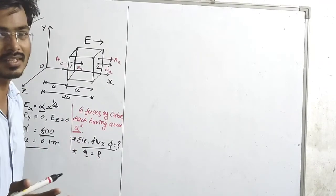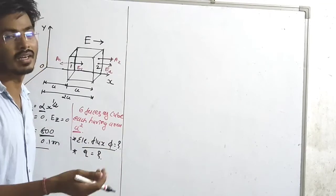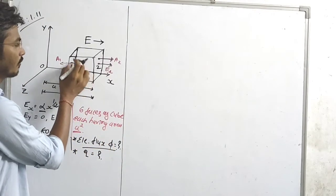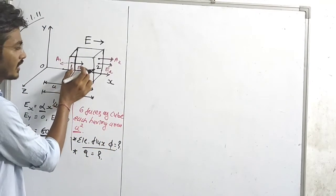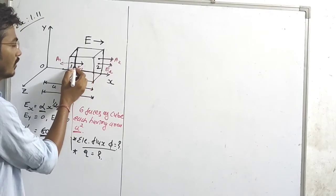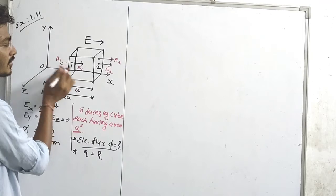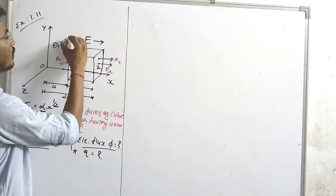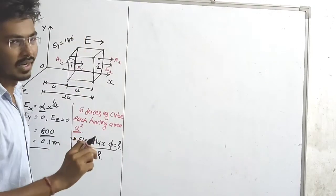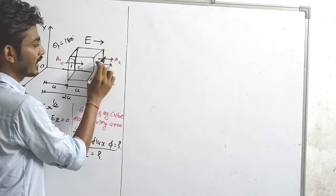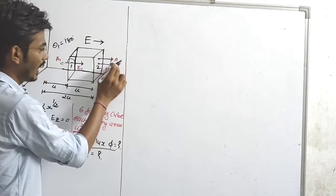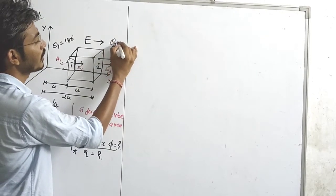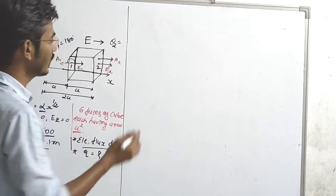We have to find out the electric flux for face 1, as shown in the figure. E1 and area A1 are in opposite directions, so the angle between them — theta 1 — is 180 degrees. Similarly, for another face as shown in the figure, the angle is considered as 0 degrees.